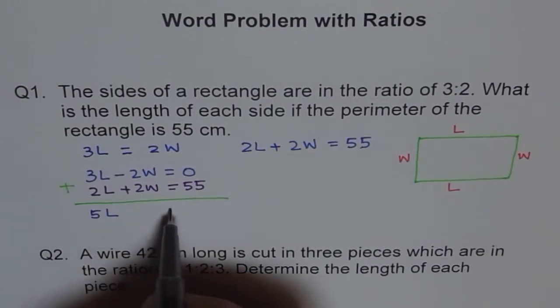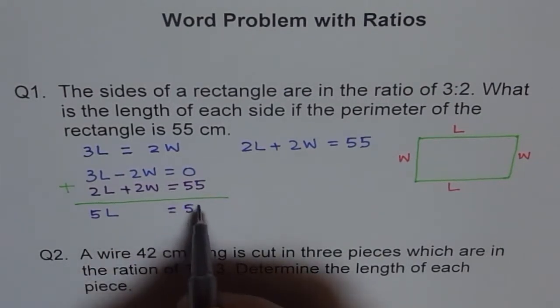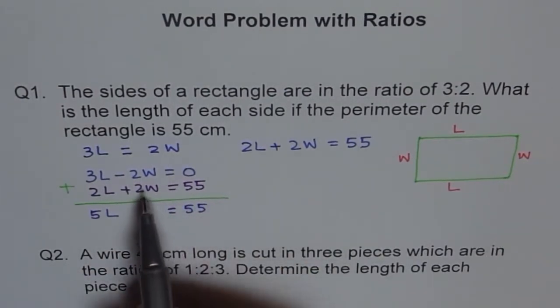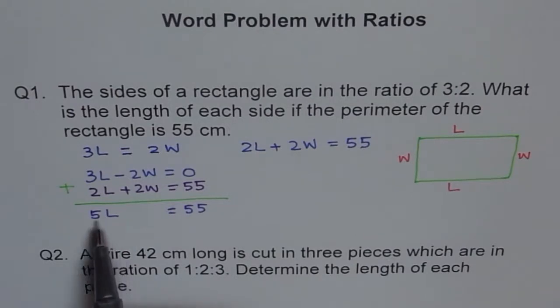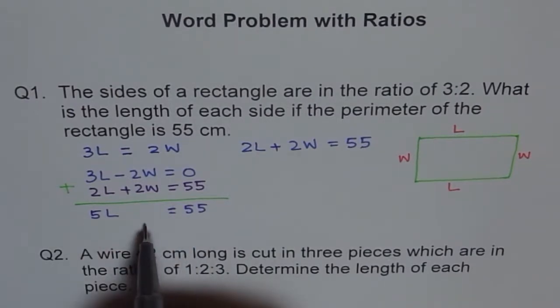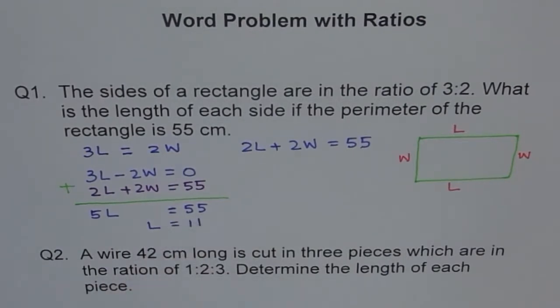If we add them up then we get 3 plus 2 is 5, 5L, and this is 0. Do you see that this becomes 0 equals to 55? So we eliminated W in this process. Therefore this way of solving simultaneous equations is also called the method of elimination. And now we have only one variable: 5L equals to 55.